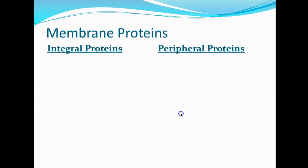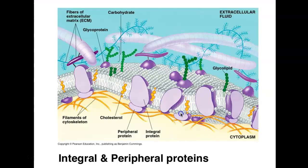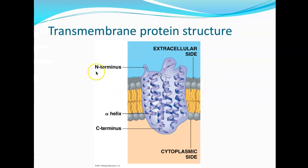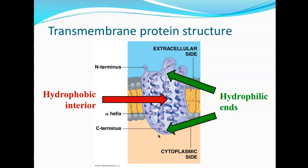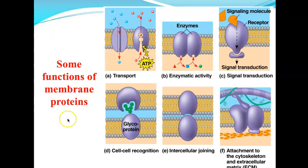What are the properties of integral transmembrane proteins? If an integral protein or transmembrane protein is embedded through the membrane, it has to be amphipathic — with a hydrophobic interior and hydrophilic ends. That's the only way it's going to be able to sit in the membrane. What are the functions of membrane proteins? Transport, enzyme, signaling, cell-to-cell recognition, intracellular joining, and attachment to the cytoskeleton and the ECM.